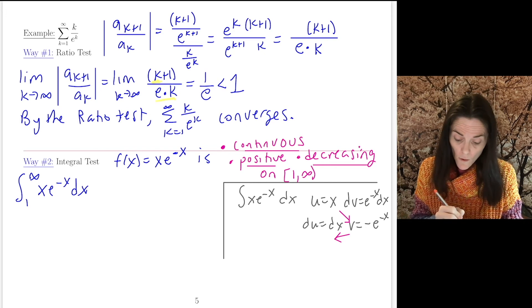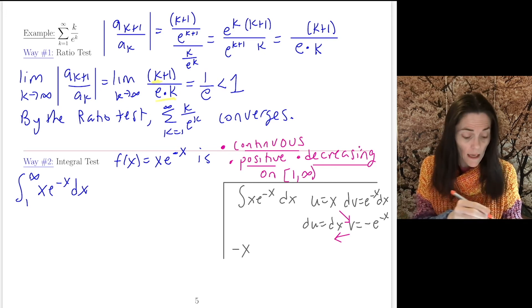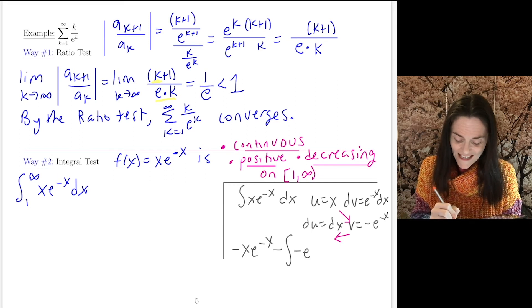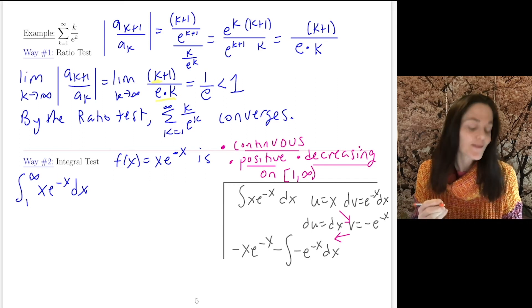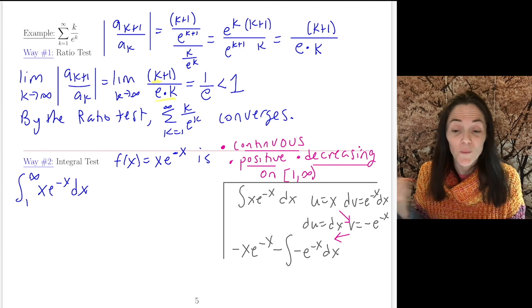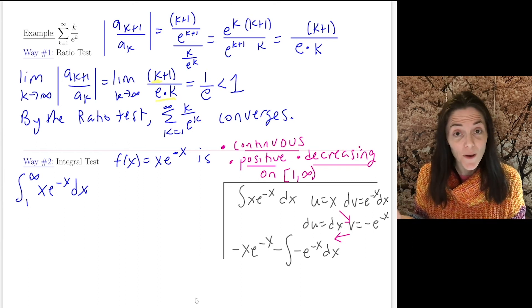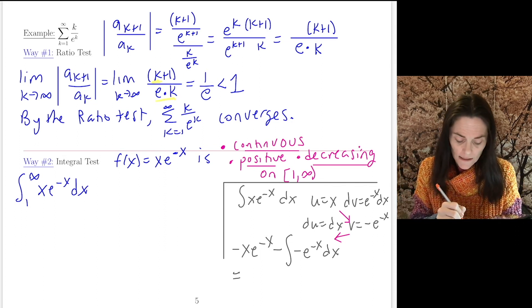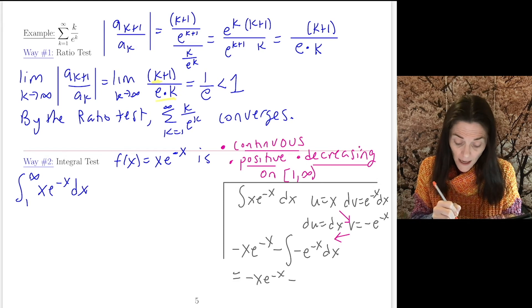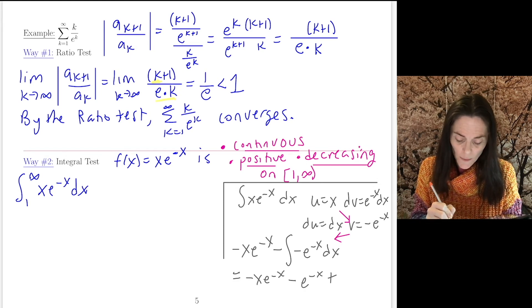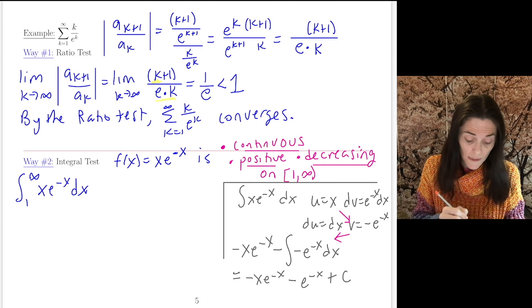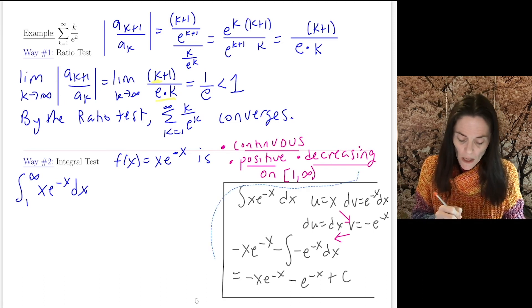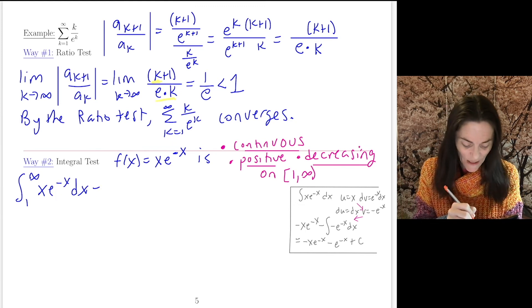So it's going to look like this. We will have -x·e^(-x). Then minus the integral. We have -e^(-x) dx. And one more step when we integrate. We have two negatives, which is positive. But when we integrate, we get another negative. This is -x·e^(-x) - e^(-x) + c. This was just some side work that will help me.